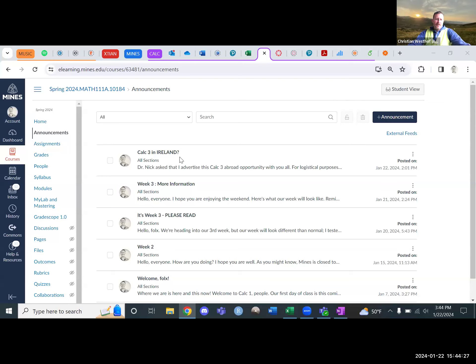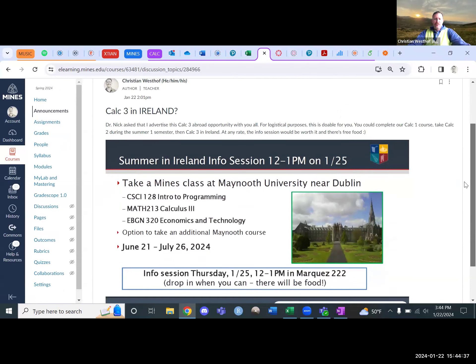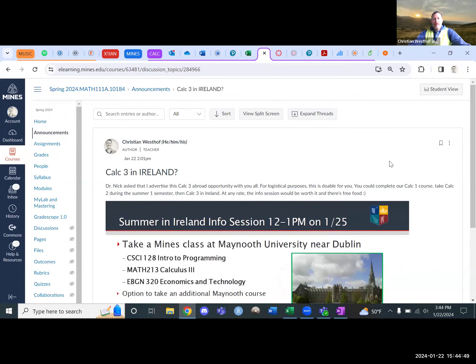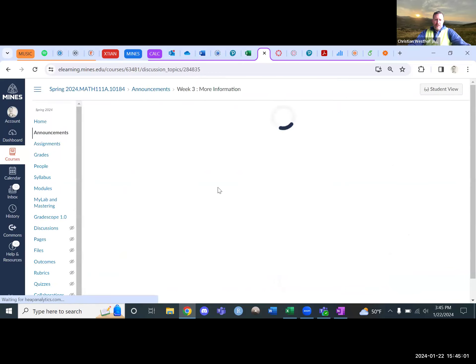Here we are, Canvas. A few things. One, there's an announcement regarding Ireland. So if you complete this class, then take calc two in summer one, which is totally doable, and then go to Ireland and take calc three. That would be pretty sweet.